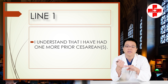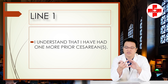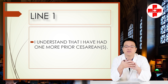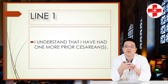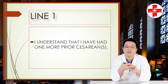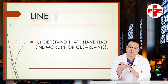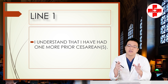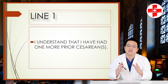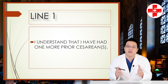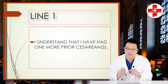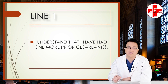Whether it's one C-section, two C-sections, a low vertical C-section, or even an unknown scar fairly certain to be in the lower non-contracting part of the uterus, you are a candidate for a trial of labor after C-section. Your risk of rupture will vary, but ultimately it's low enough to justify trying a trial of labor after C-section in the right setting with all safety precautions taken.